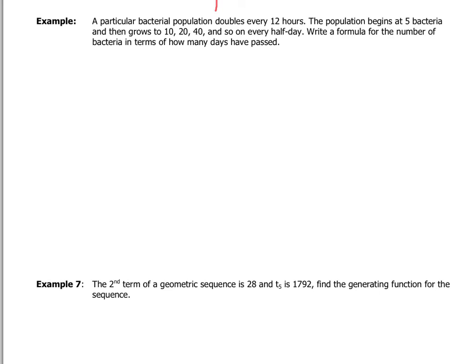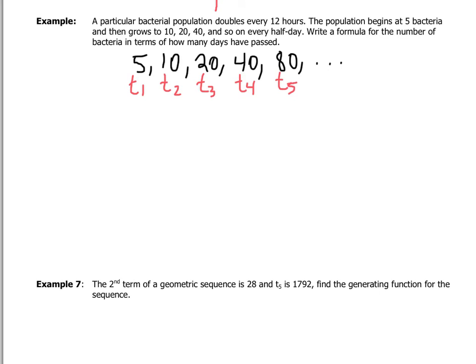A bacterial population doubles every 12 hours. It begins at 5 bacteria, then grows to 10, 20, 40, 80, and so on every half day. We are asked to write a formula for the number of bacteria in terms of how many days have passed. Writing down the sequence: 5, 10, 20, 40, 80,... with term numbers 1, 2, 3, 4, 5, and so on.